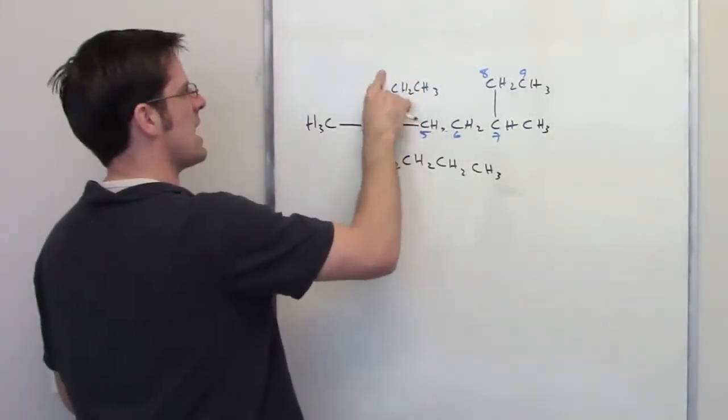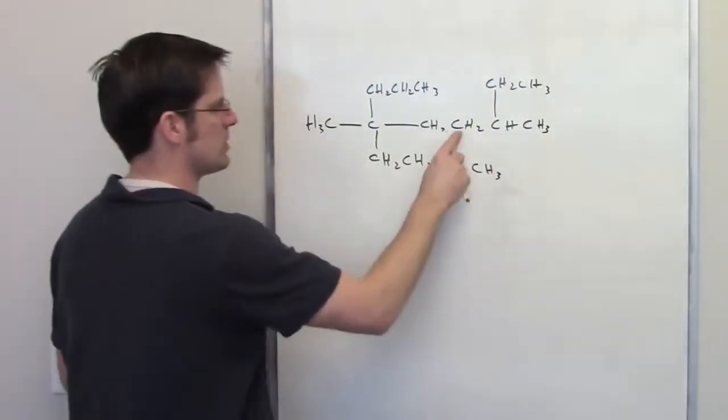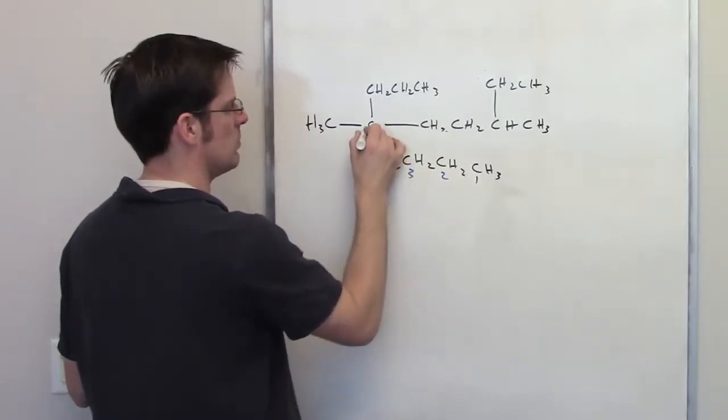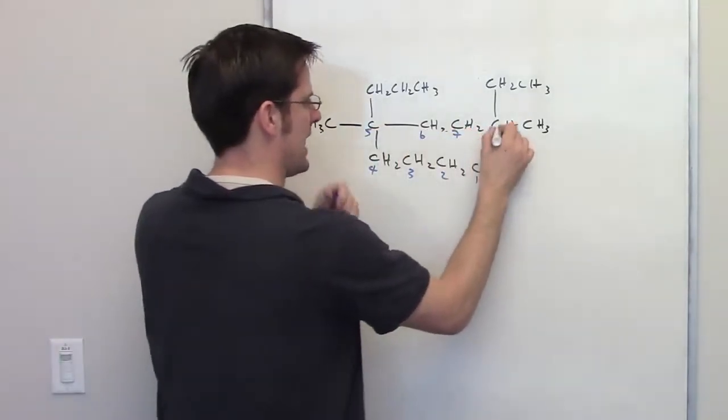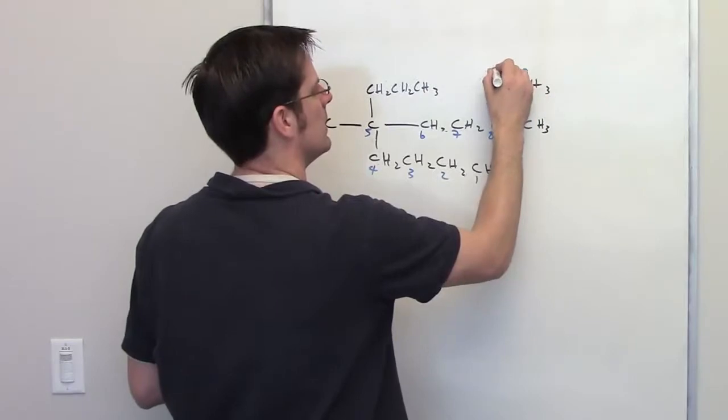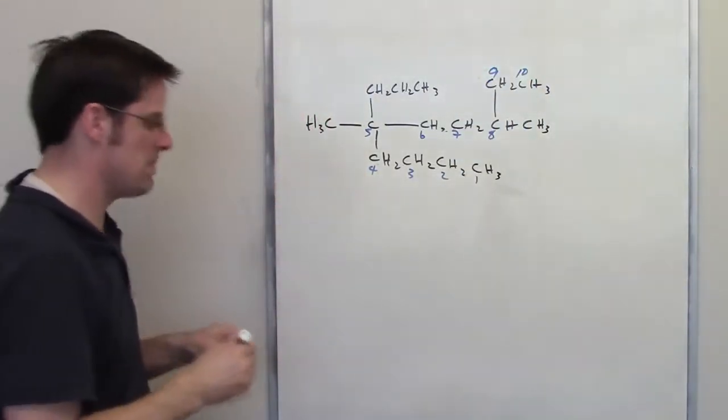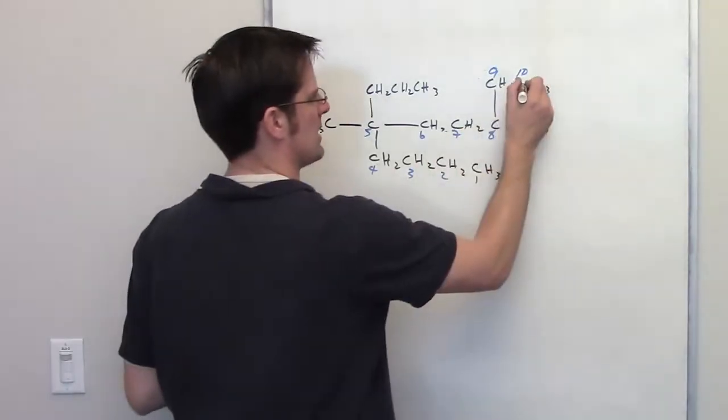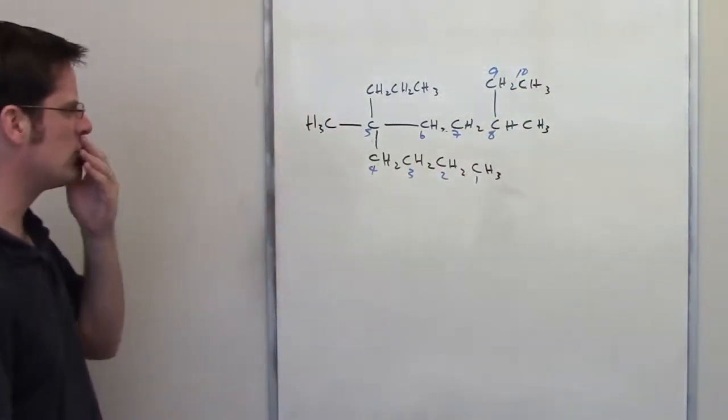Well, what if instead I started here and I called that carbon one, I went 1, 2, 3, 4, 5, 6, 7, 8, 9, 10. I think that's probably going to do it. I think that might be the parent chain and is certainly the longest chain that I think we're going to be able to come up with for this structure.